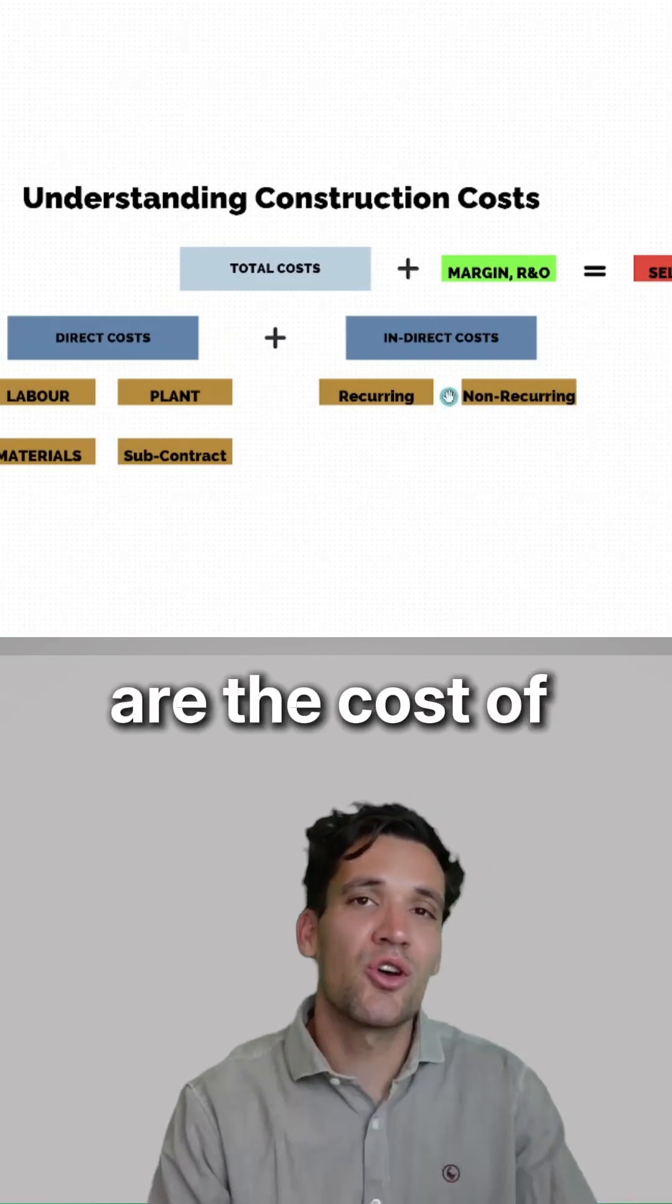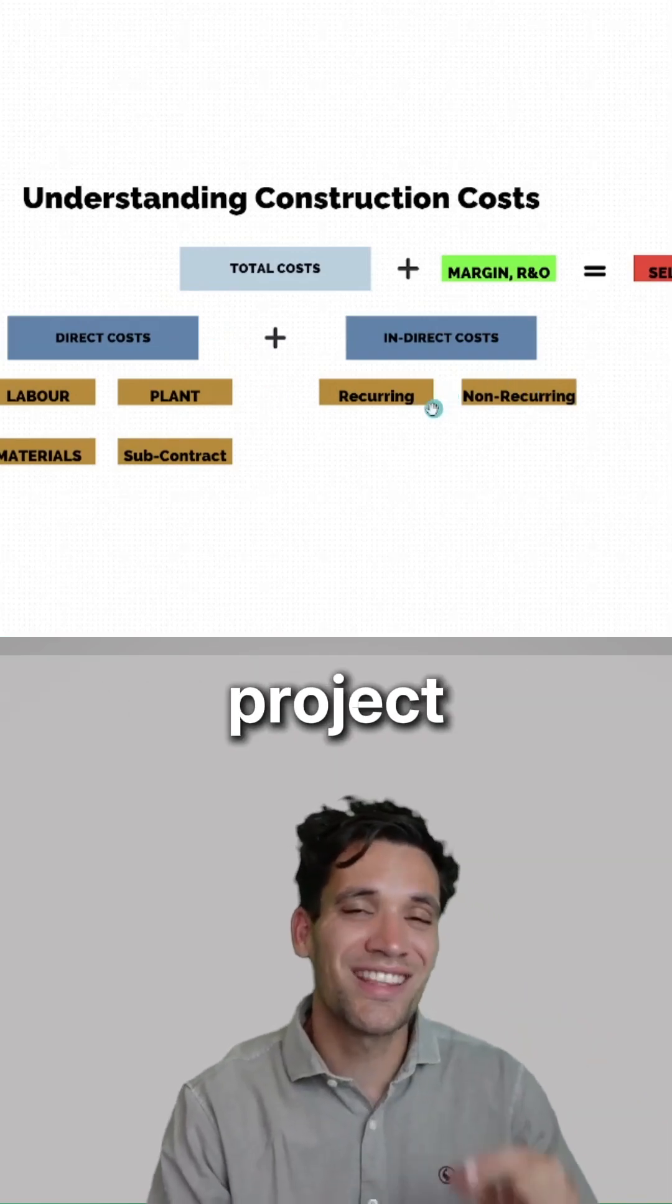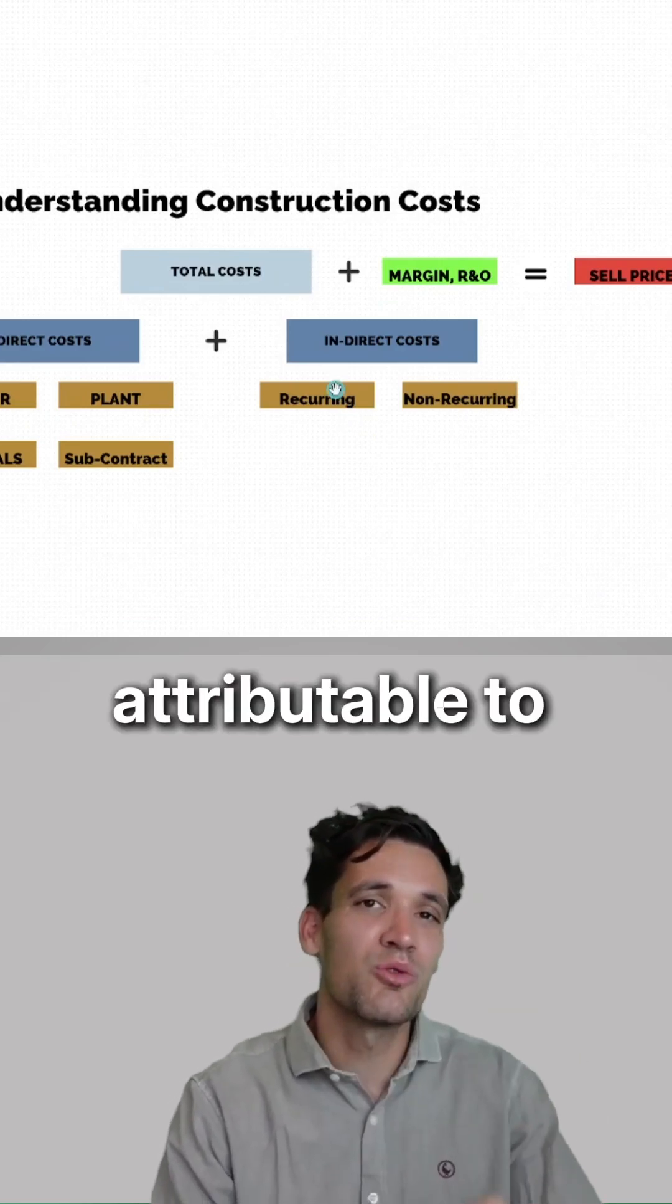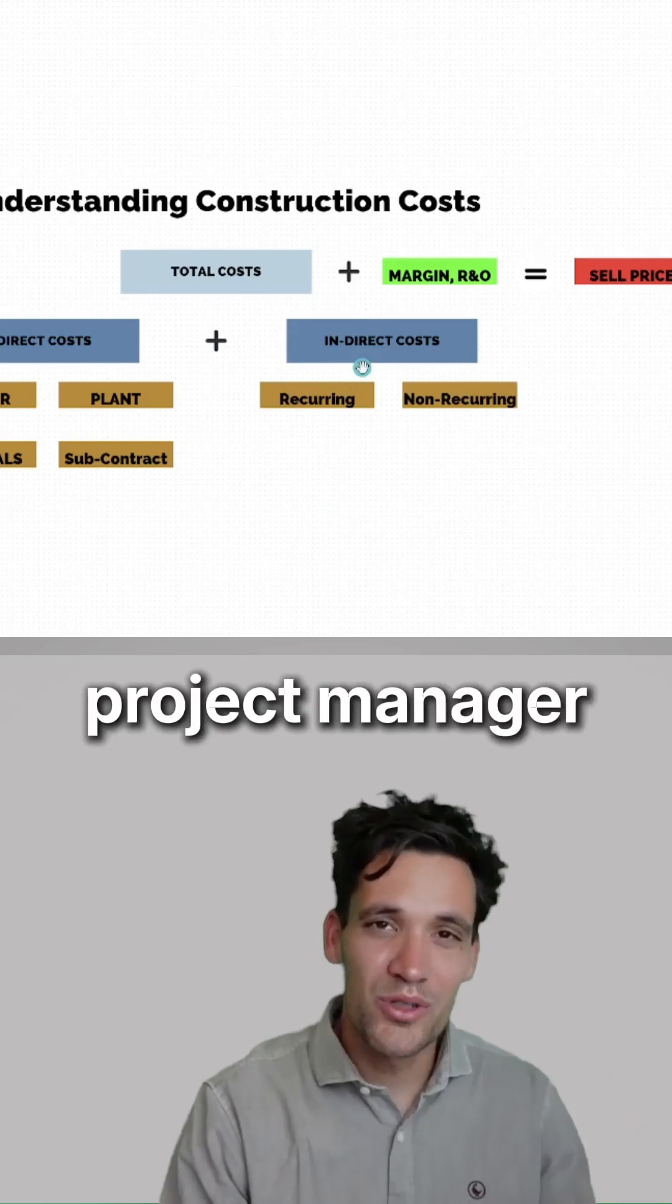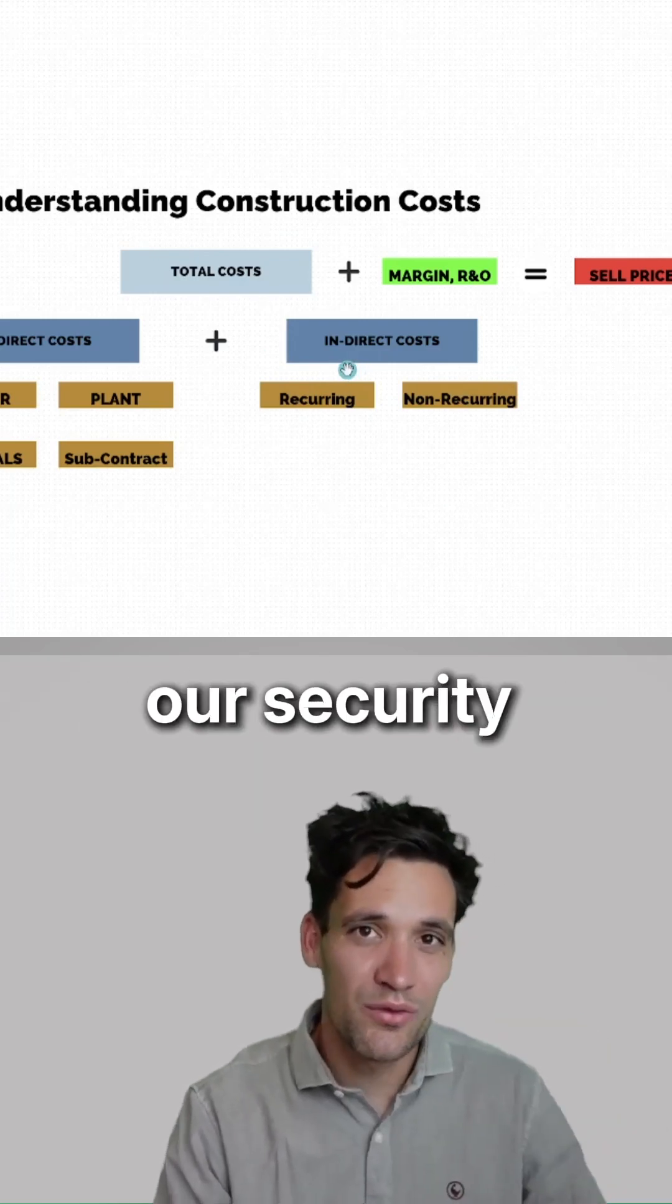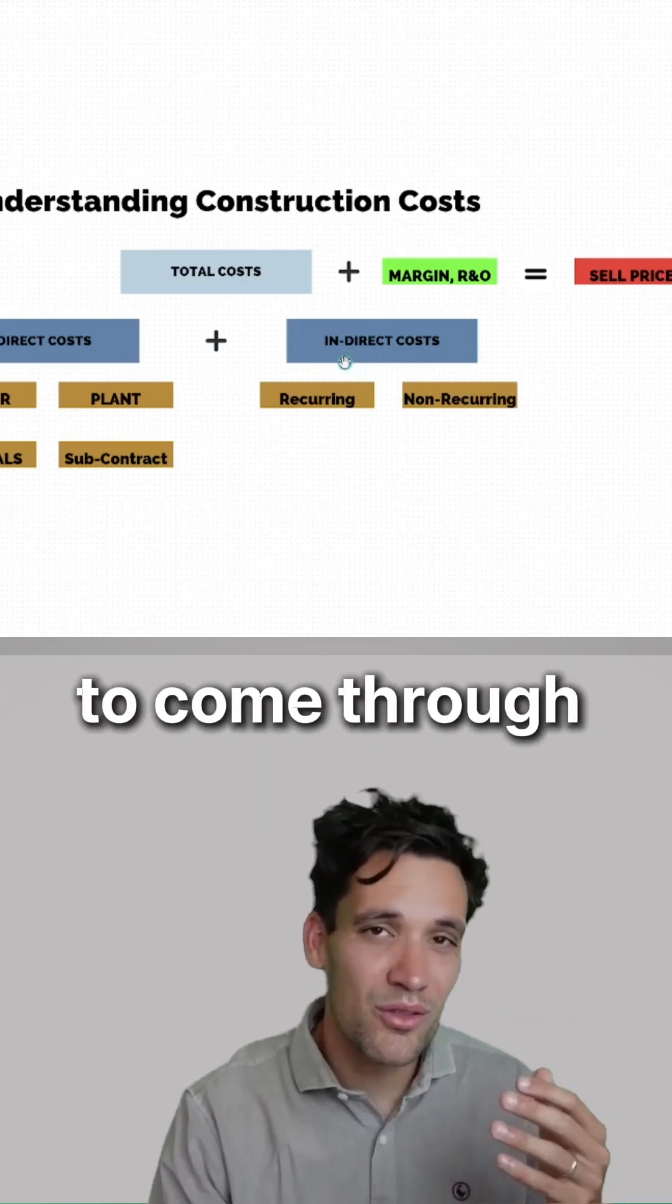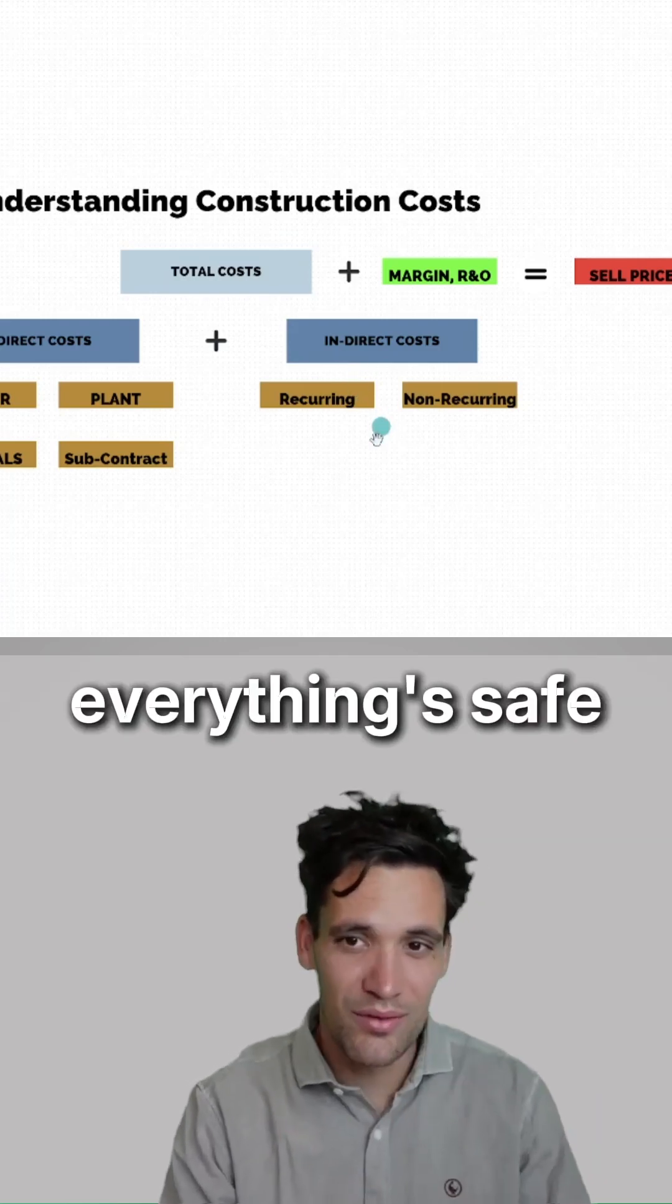Our indirect costs are the costs of running the construction project that aren't directly attributable to any specific part of the finished product. These are going to be things like our project manager salary, our security fencing, or security guard to come through the construction project at night and check everything's set.